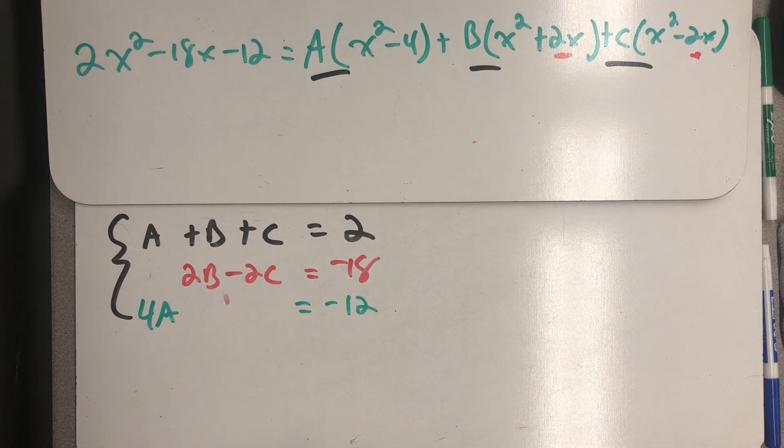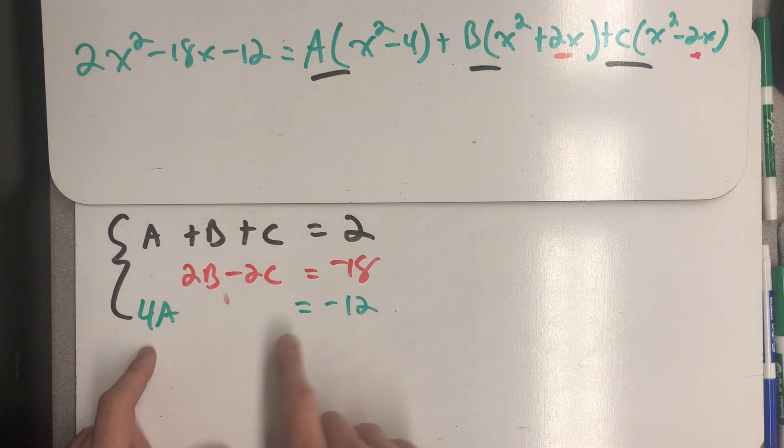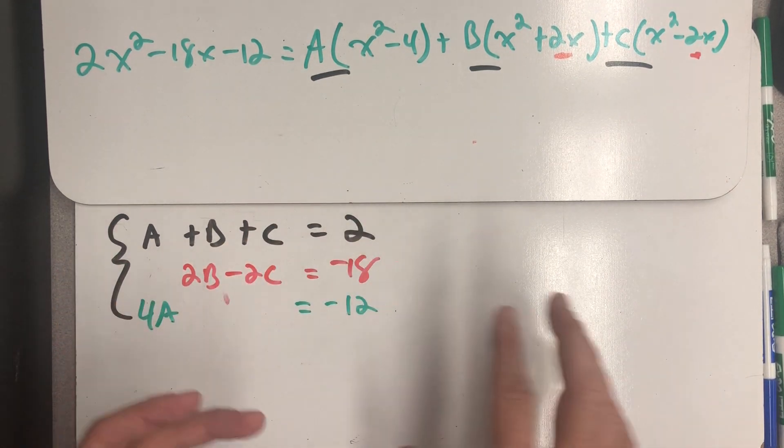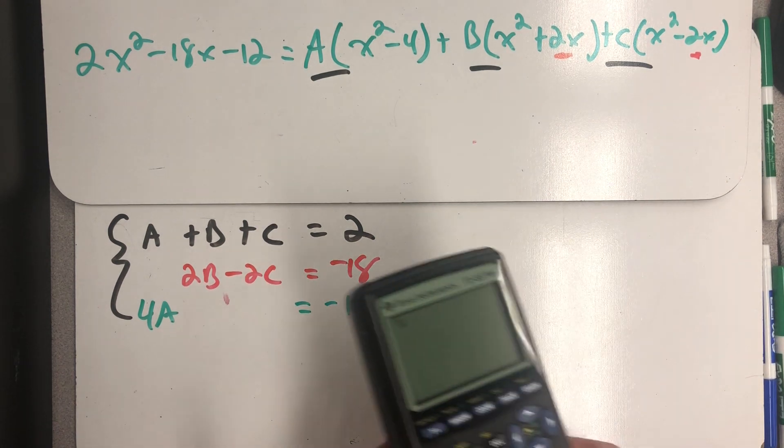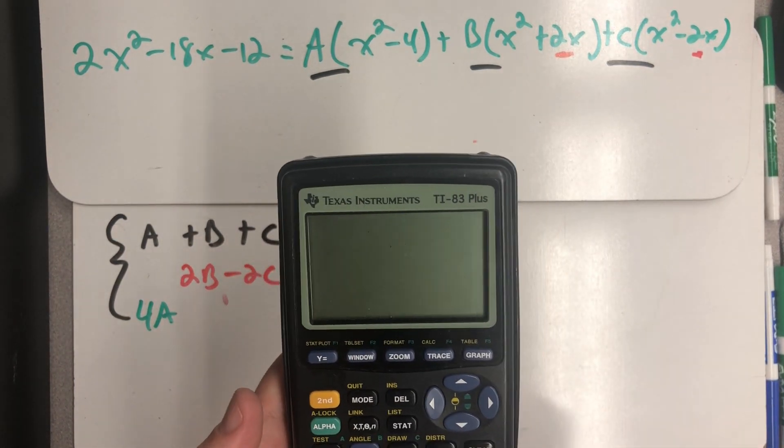Well I don't think this would be too hard of a system to just solve because I can find A really quickly, plug it in here and have a system on two variables but part of what I wanted to do in this example is demonstrate the calculator again.